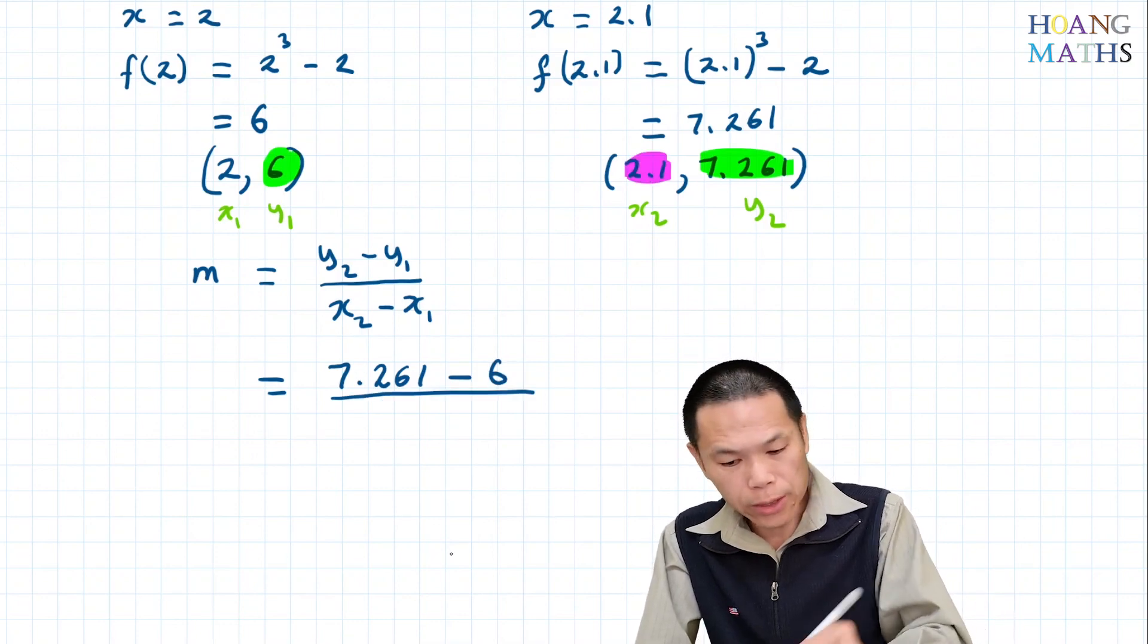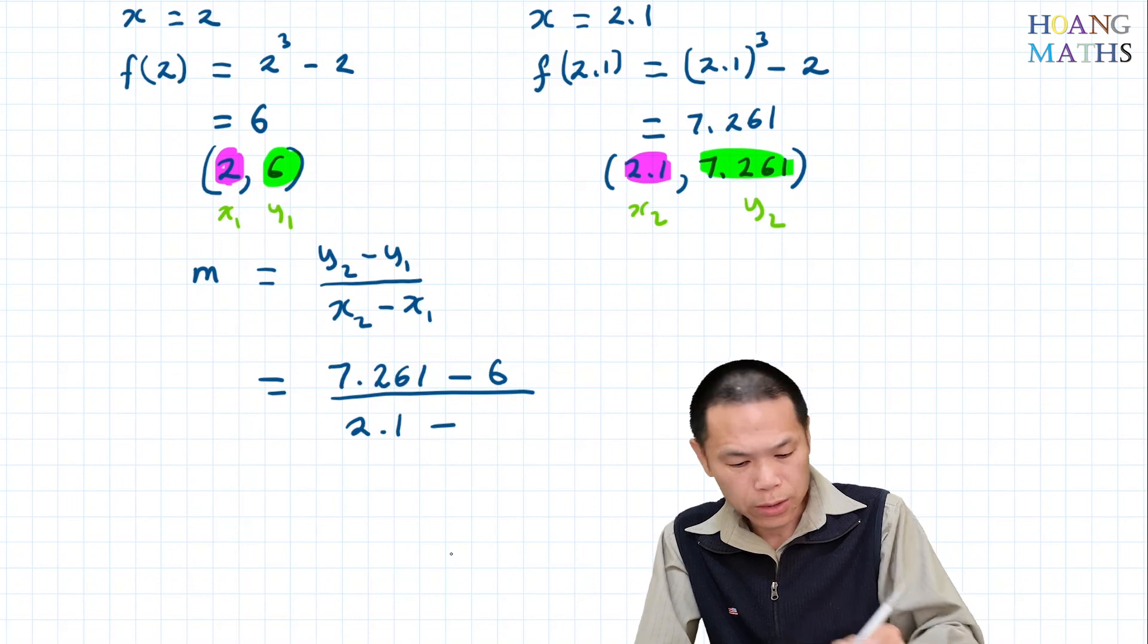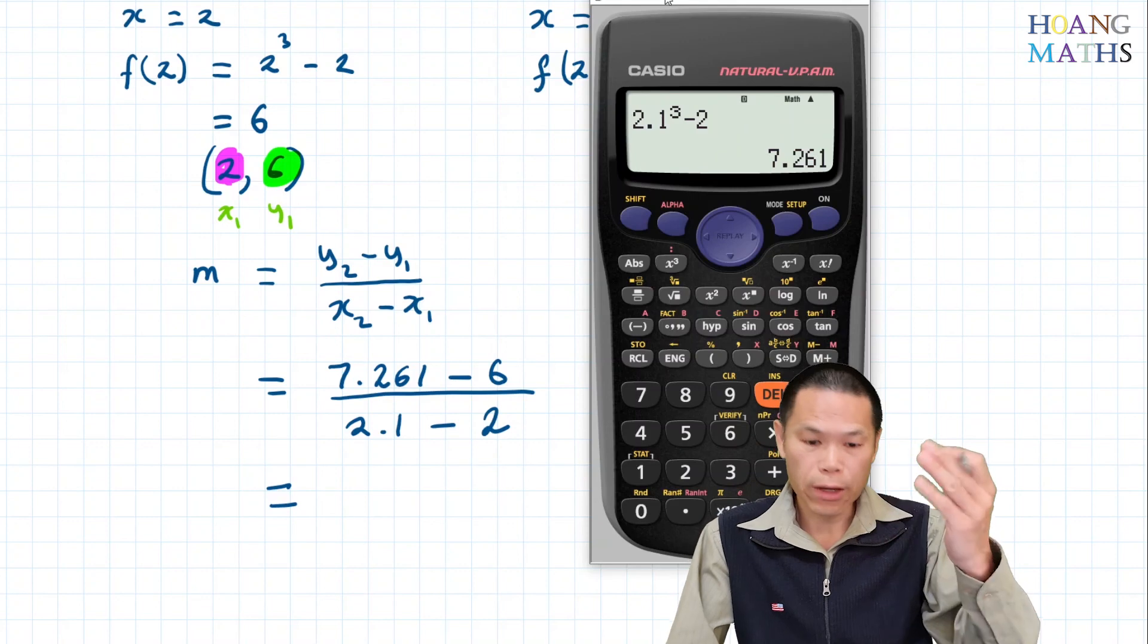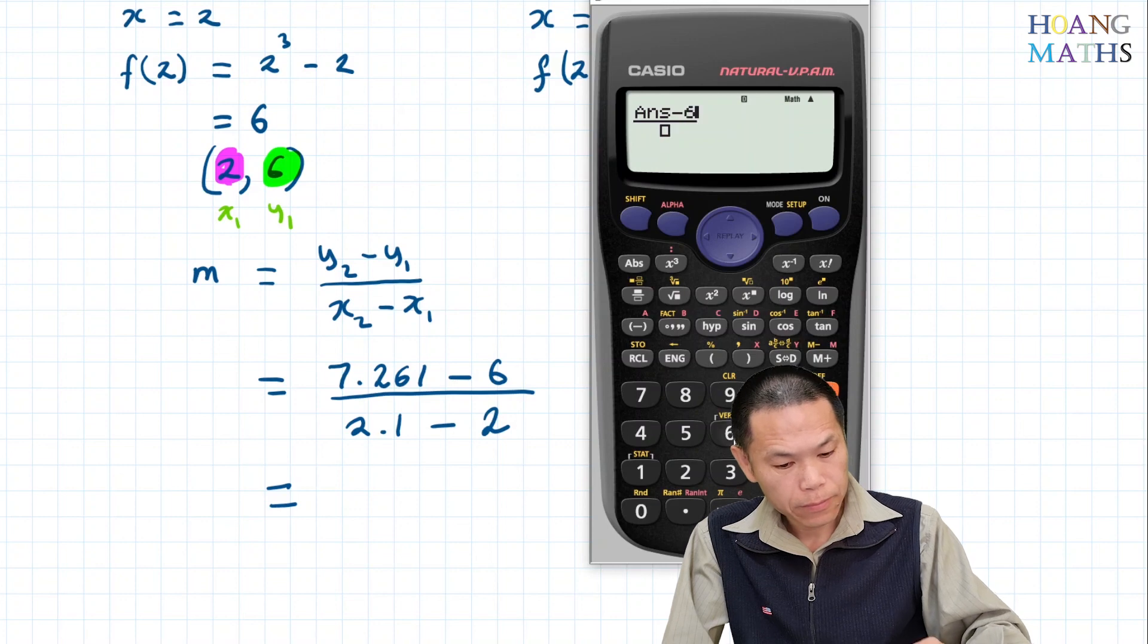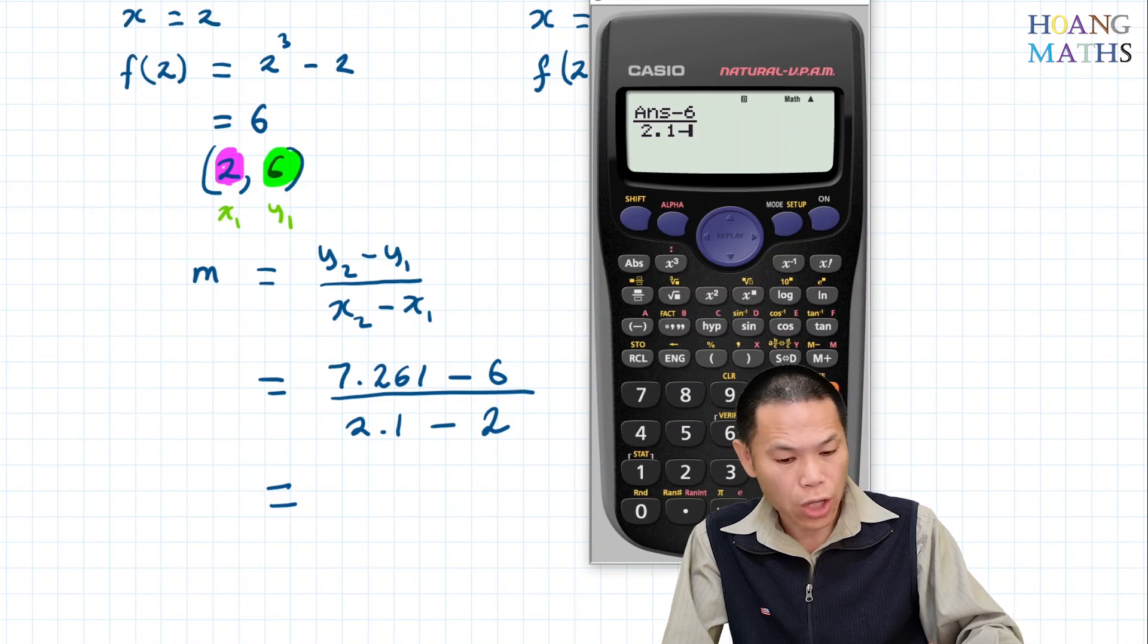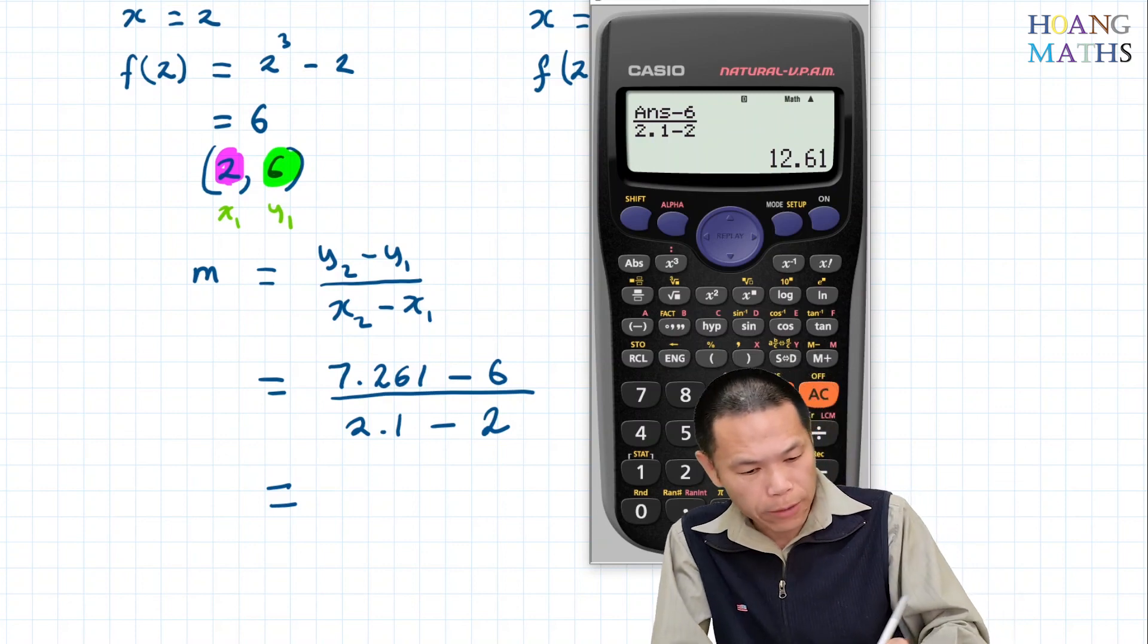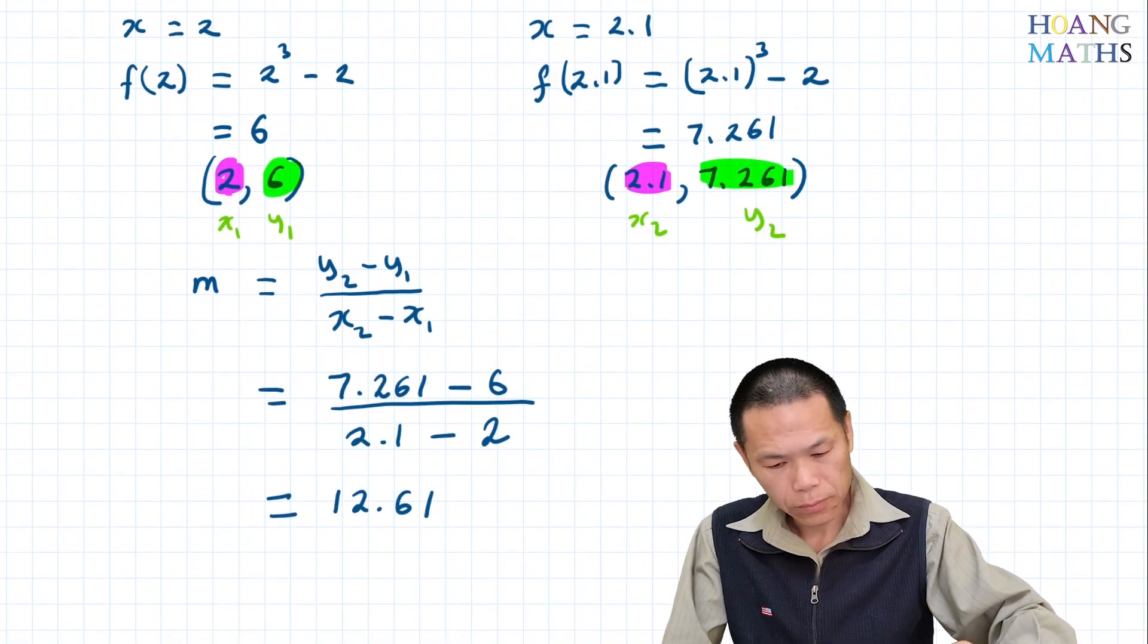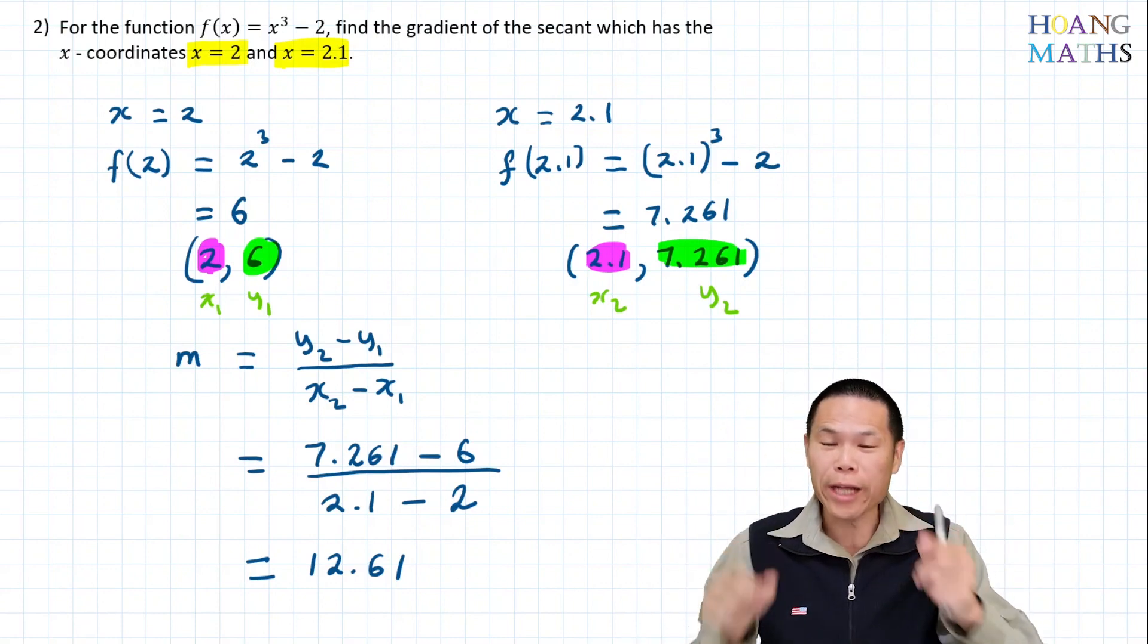That's (7.261 - 6)/(2.1 - 2), which we can calculate as 1.261/0.1. That gives us 12.61. Thank you so much for watching, I hope you got it correct. Bye!